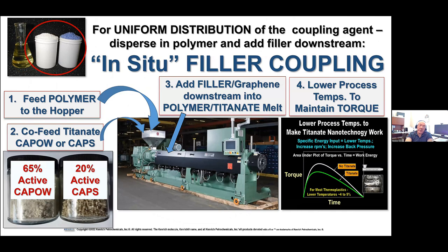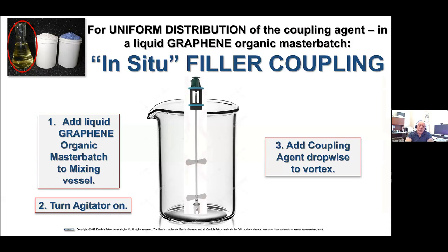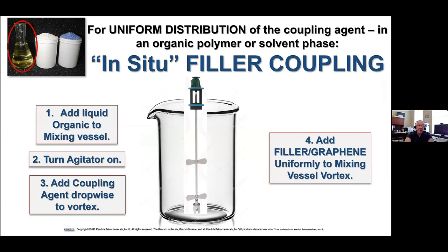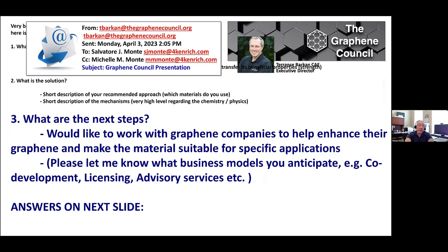It's the same thing adding the coupling agent to the polymer phase in the hopper, then adding the graphene or material to be coupled downstream — watching your temperatures, lowering the temperatures to maintain the shear, keep your amps up, keep the work energy up. The alternate order of addition: add the liquid graphene organic master batch to the mixing bed, turn the agitator on, and then add the coupling agent drop-wise. In other words, if you've already got graphene already master-batched, agitate the hell out of it and then add the coupling agent into that vortex drop-wise slowly. For in-situ coupling, put the coupling agent into the liquid phase and then add the graphene while agitating.